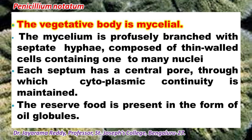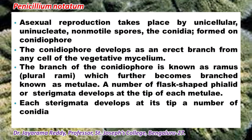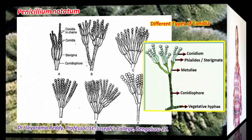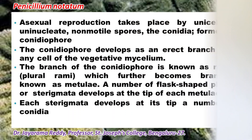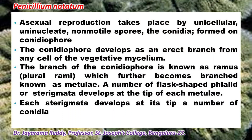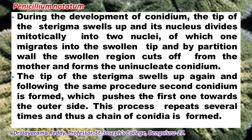Penicillium reproduces by both sexual and asexual methods. It reproduces asexually by means of conidia, and conidia are produced on conidiophores. Conidia are spherical or elliptical structures and are dispersed by wind. Conidia are green, yellow, and blue in colour. They are spherical or sub-spherical and are spread by wind. Thus the reproduction of Penicillium occurs.